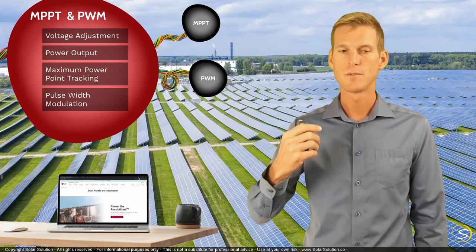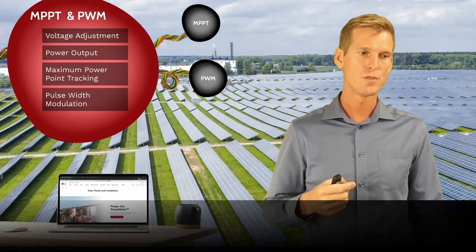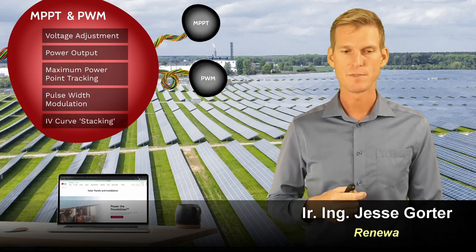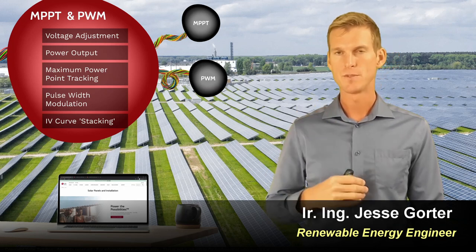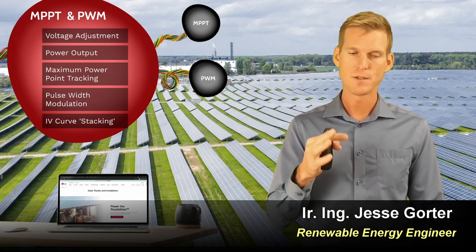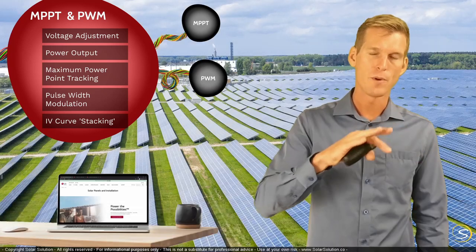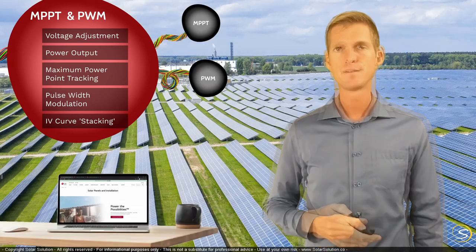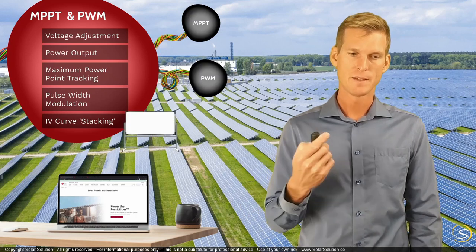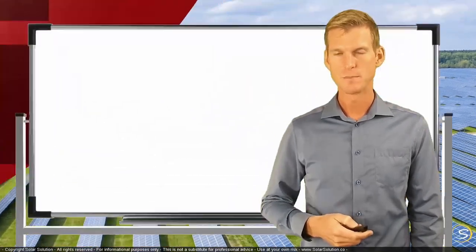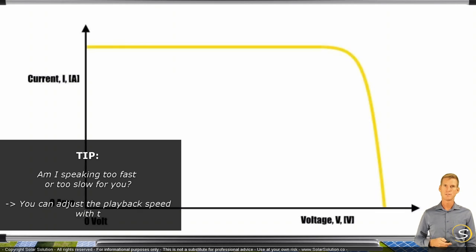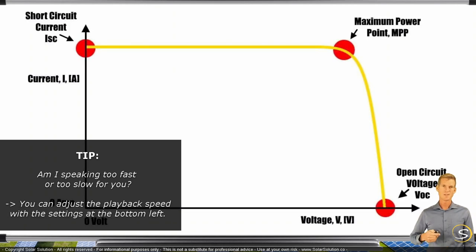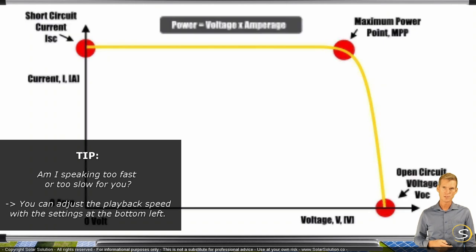Now before we dive into these two topics I want to explain and show you what IV curve stacking is. This is a concept that I think you should be aware of before we look into the actual charging algorithms, and this builds on the information that you've learned by now on what an IV curve actually is. So let's go to the whiteboard and pull up the IV curve in the graph that we've seen before. We've got current in amps on the i-axis, voltage on the horizontal axis. Then we have the IV curve with the three points that we've seen before and we understand that power equals voltage times amperage.